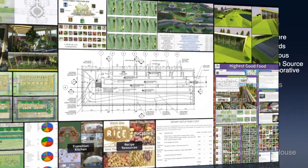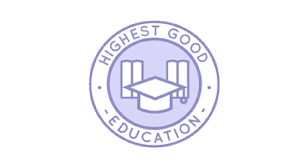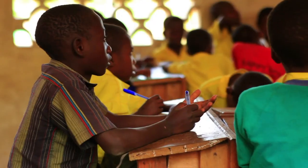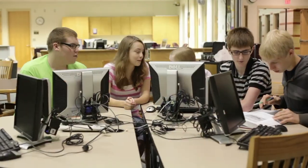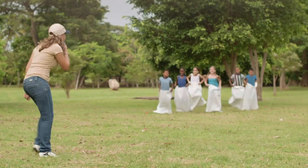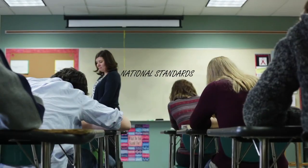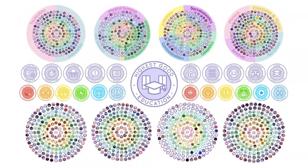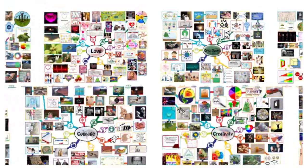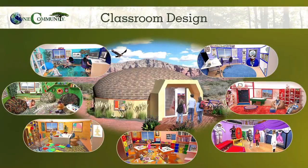The next component is Highest Good Education. This component is complete and pretty much ready to launch once we're on the property. One Community's approach is designed for all age groups, adaptable to any schooling environment, inspiring and fun for all participants, and includes national standards, all subjects, lesson plans, teaching strategies, learning strategies and tools, classroom design, and more.